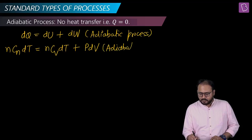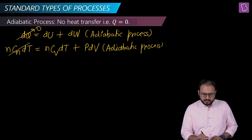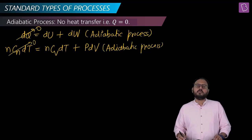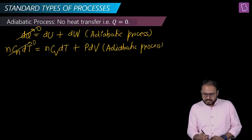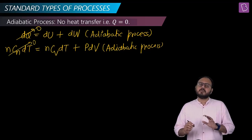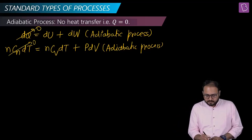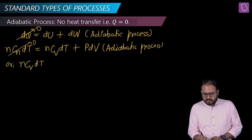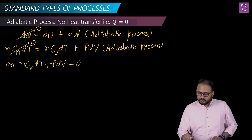For adiabatic process, what happens? The left-hand side becomes zero. So n·Cv·dT + P·dV becomes equal to zero.